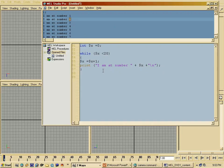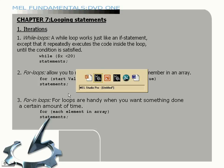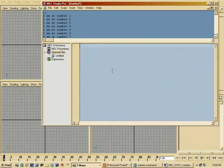In all honesty I don't use while loops too much, because the next kind of loop — the for loop — is a much more powerful form that does exactly the same with the same amount of setup. For loops allow you to repeat a chunk of code. For-in loops are handy when you want something done a certain number of times. The syntax is: for, then start value, end value, increment value, and then the statements.